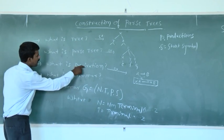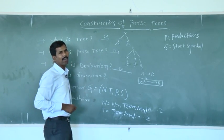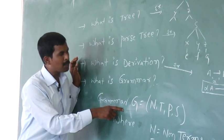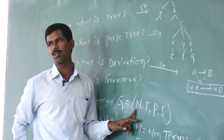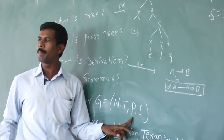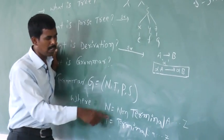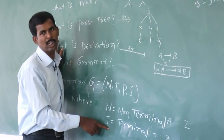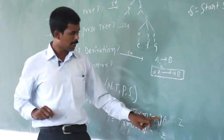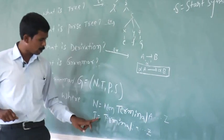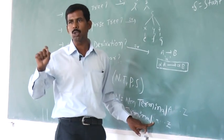In the derivation we have the word grammar. The grammar is a set of rules and regulations that govern a language. In compilers, the grammar is represented in terms of four components: N, T, P, and S. Here N is the non-terminal, T is the terminal, P is the productions, and S is the start symbol. Non-terminals are represented with capital letters of the alphabet — capital A to capital Z — while terminals are represented with small letters, small a to small z.